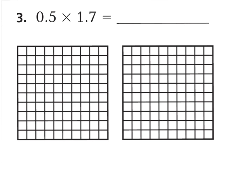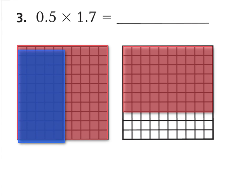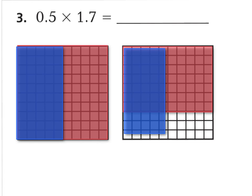For question number 3, we want to shade in 1 whole and 7 tenths. Go ahead and shade in 1 whole and 7 tenths lightly. I went ahead and did 1 whole and 7 tenths. Now we want to shade in 5 tenths of this amount. Remember, a multiplication symbol means the word 'of,' and 5 tenths also means 1 half. So we're shading in half of 1 and 7 tenths — 5 tenths of both models. There's 5 tenths, and I need to shade in 5 tenths of this model as well — I'm going to shade in half of this one.